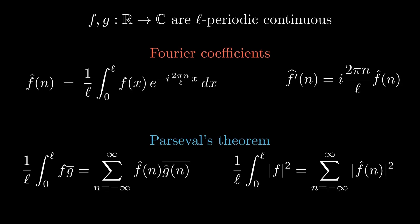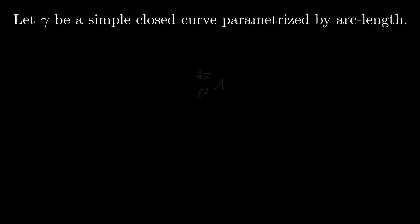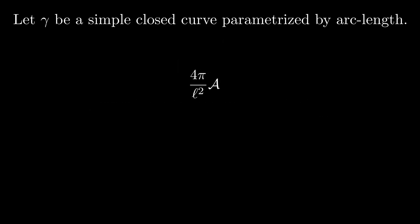Now we are ready to prove the isoperimetric inequality. We assume we are given a simple closed curve parameterized by arc length. We have to prove that this expression is less than or equal to 1.